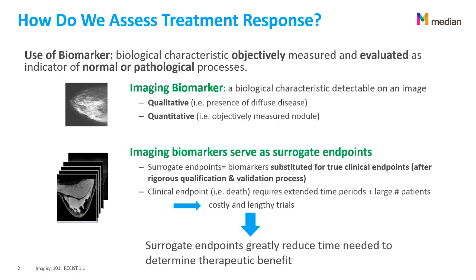Imaging biomarkers can serve as surrogate endpoints in a clinical trial. Surrogate endpoints are substituted for true clinical endpoints — such as death of the patient — after a rigorous qualification and validation process. Using true clinical endpoints requires too much time and a large number of patients, so surrogate endpoints greatly reduce the time needed to determine therapeutic benefits.